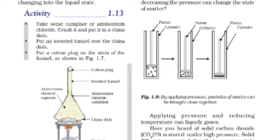Put an inverted funnel over the china dish. Put a cotton plug on the stem of the funnel. When you heat it and observe, the ammonium chloride is not in the solid state anymore — it has sublimed.